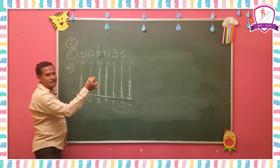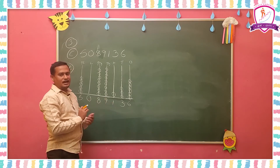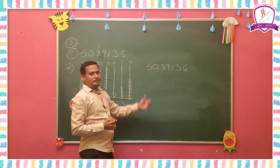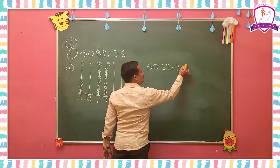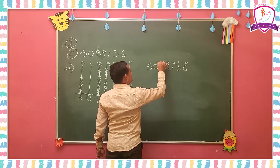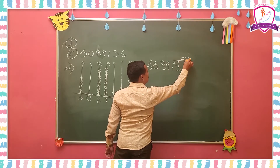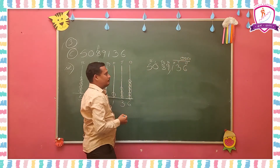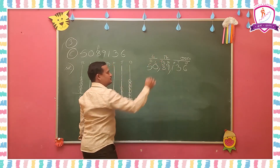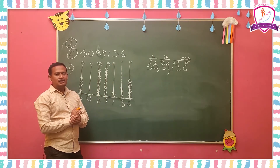Then go for the second thing. Write this number using commas — copy the number again. You have to write the places: ones, tens, hundreds, thousands, ten thousands, lakhs, ten lakhs. Ones, tens, and hundreds will become one period; after that put a comma. Thousands and ten thousands will become the thousands period; then put a comma. Lakhs and ten lakhs will be the lakhs period. Like this you have to write the number using commas.